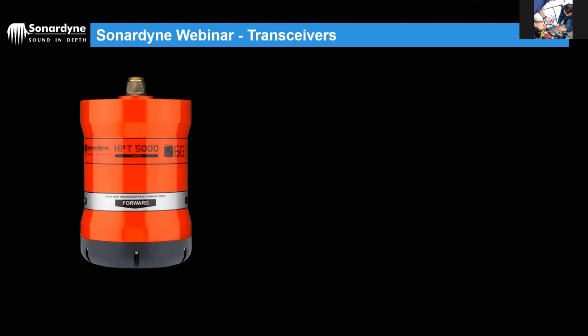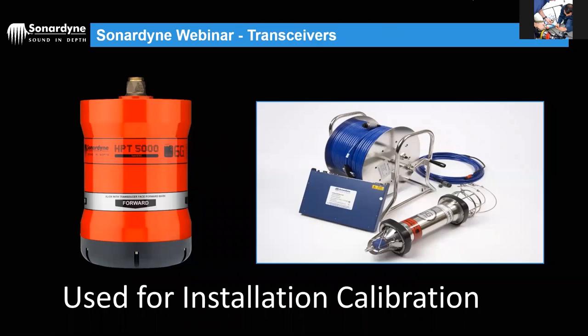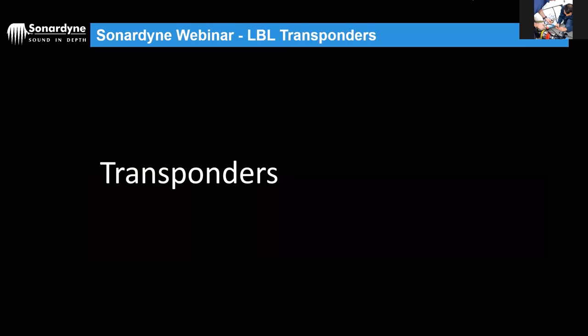Other transceivers that can be used in LBL systems include the HPT — High Performance Transceiver, our USBL head — and the 6G dunker, which is a transducer and comms element lowered into the water with a topside power unit. These are mainly used for installation and calibration to communicate with the array during setup, though they can also track a vessel's position using LBL ranges.